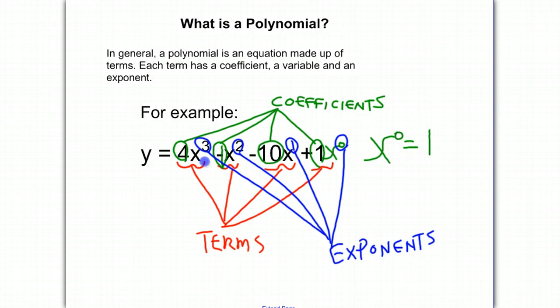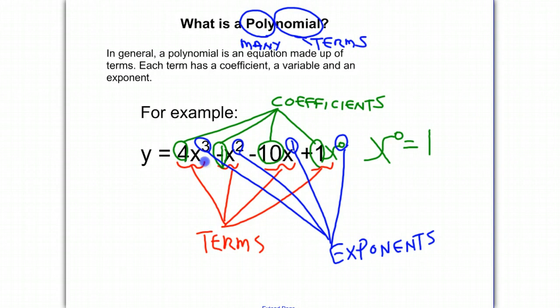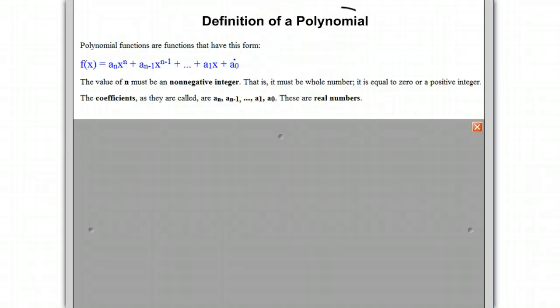The term polynomial, as we said, is an equation made up of many terms. The name actually comes from 'poly,' meaning many, and 'nominal,' meaning terms. The formal definition of a polynomial is any function that could be put in the form of a coefficient times a variable raised to a power, in general.